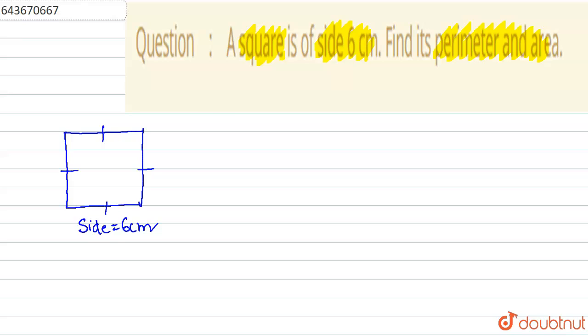So we have to find its perimeter. Let us first write given: side of the square is equal to 6 centimeter.